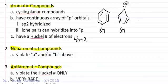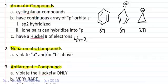We can also invoke a carbocation as one of our p orbitals in our cyclic array. So if n equals 0, the 2 pi cyclopropenyl cation is also aromatic. Non-aromatic compounds violate rule A or B.